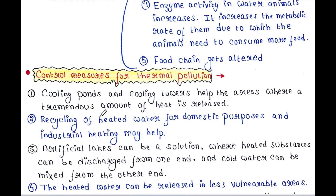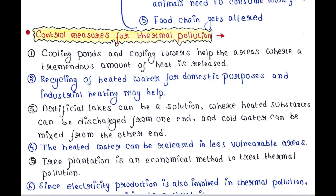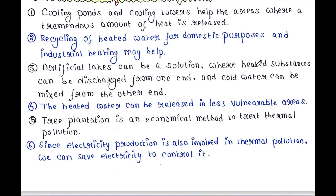Now let's talk about control measures for thermal pollution. Cooling ponds and cooling towers help in areas where a tremendous amount of heat is released. Recycling heated water for domestic purposes and industrial heating may also help. Artificial lakes can be a solution where heated substances are discharged from one end and cold water is mixed from the other. Heated water can be released in less vulnerable areas. Tree plantation is an economical method to treat thermal pollution. Since electricity production is also involved in thermal pollution, we can save electricity to help control it.